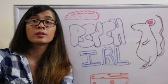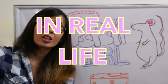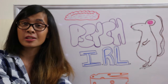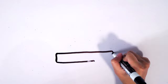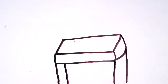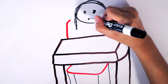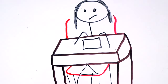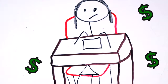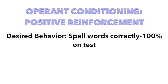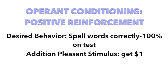So how does this apply to humans? Operant conditioning IRL. In elementary school, we had spelling tests every Friday. I hated these tests, but I knew if I got a hundred percent, I would get a dollar from my parents. So the behavior was spelling each word correctly and getting a hundred percent, and the addition of the positive stimulus was getting the dollar.